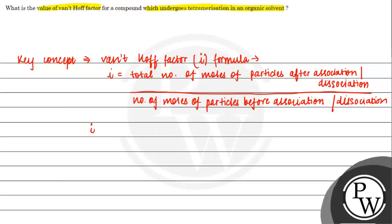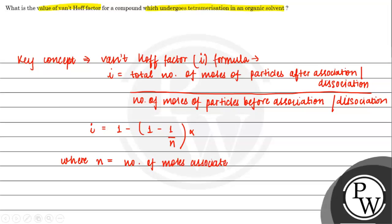Now I can write a more generalised formula: I is equal to 1 minus (1 minus 1/n) into alpha, where n is the number of molecules that associate, and alpha is the fraction of molecules that associate. We basically use this formula in questions because it is a direct approach.